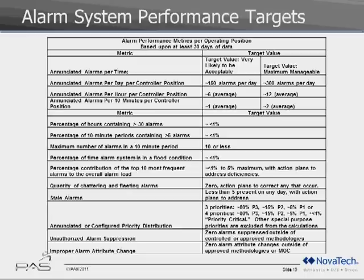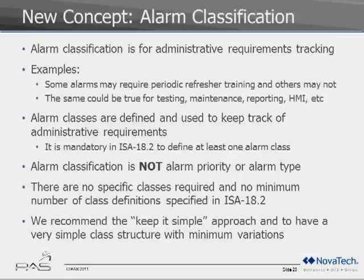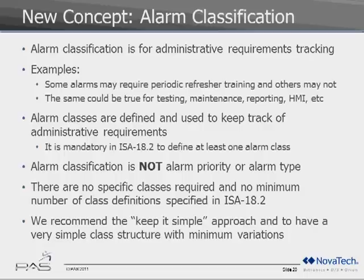A couple of additional 18.2 concepts to be aware of: one is alarm system classification. This is not a prioritization system — not the emergency, high, low alarm priority. It's more of an administrative function for tracking alarms, such as how often refresher training is required. At PAS, we recommend keeping it very simple. There are no specific required classifications in 18.2 and no minimum number of classifications that need to be defined.